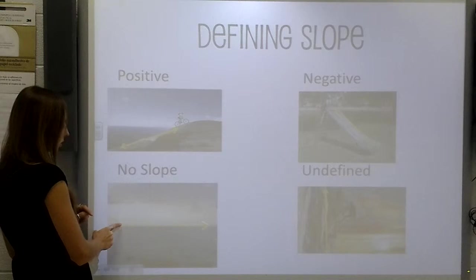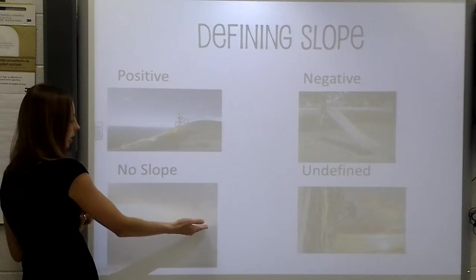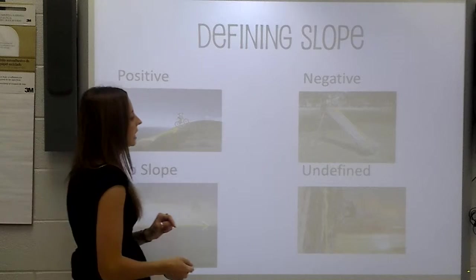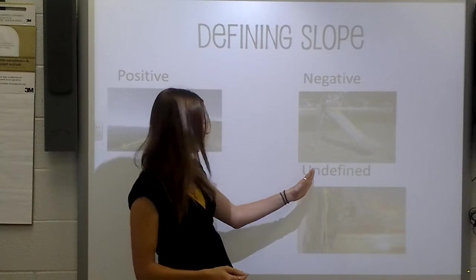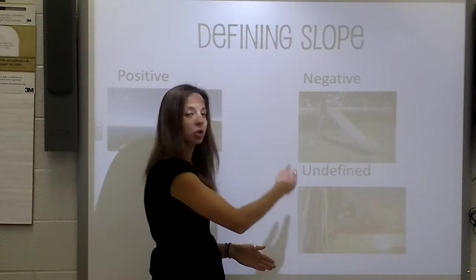And we have no slope if we have a straight line across horizontally. And then we also have an undefined slope if it goes straight up and down.